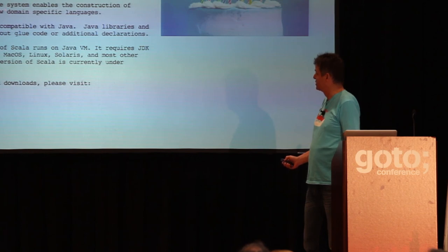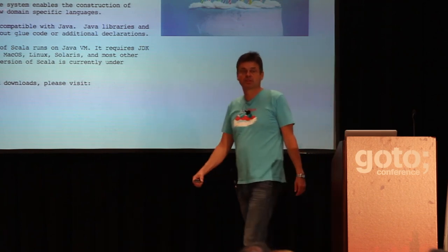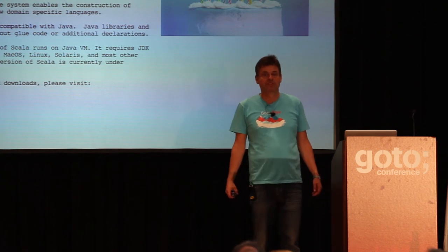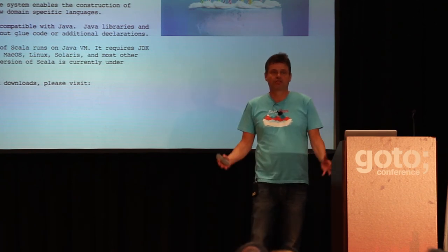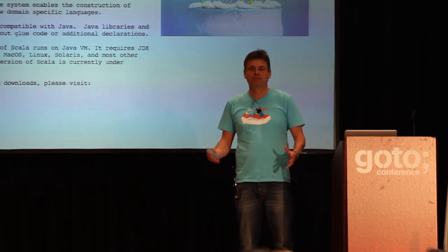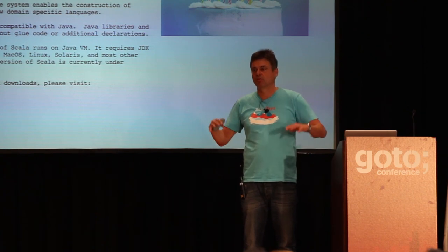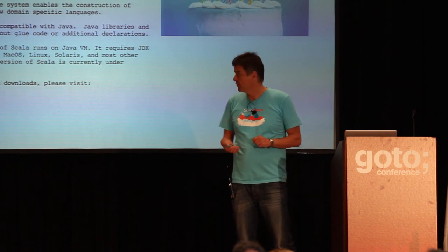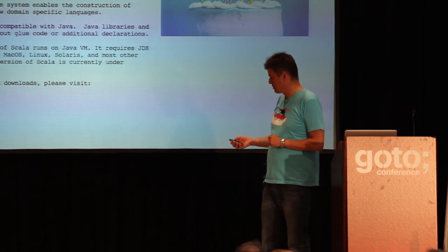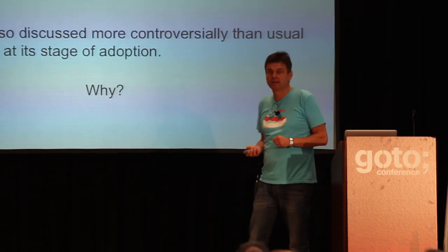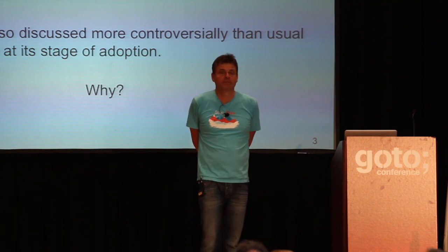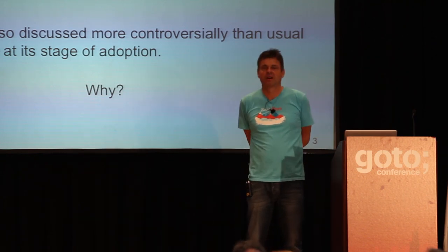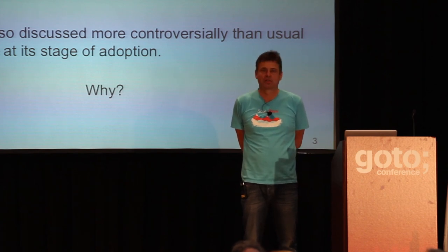The third innovation was a flexible syntax and type system that enables the construction of advanced libraries and new domain-specific languages. That shows the theme that Scala is a language that has sprouted quite a lot of domain-specific languages on top of it. Ten years later, Scala has grown quite a bit. We now have about 100,000 developers — hard to count, but that's the ballpark figure.